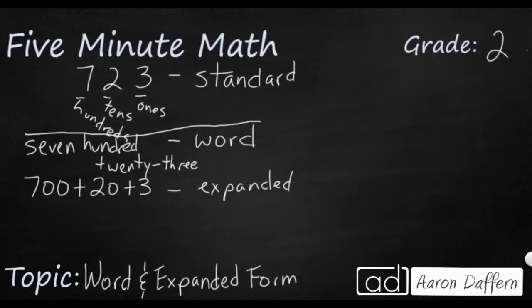If I wanted to line that up, if I wanted to just go ahead and see what this addition looks like, it would be 700 plus 20 plus 3, and you get 723. That's how expanded form works.